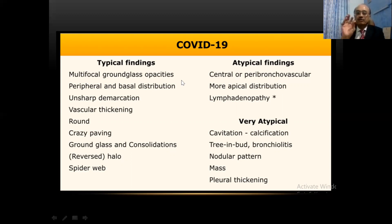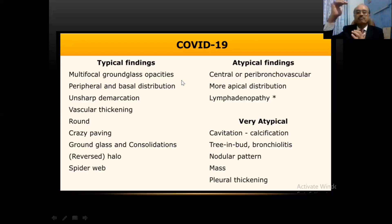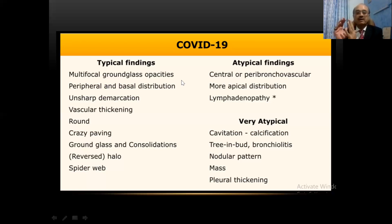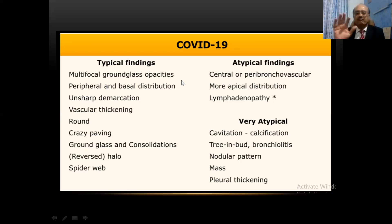There are certain atypical findings also present in COVID-19 patients, though the chances are unlikely and require correlation with other investigations. These include central or peribronchovascular shadows, ground glass opacities that are more apically distributed rather than the typical bilateral basal distribution, and lymphadenopathy — which in our country can be confused with tuberculosis, so we must keep an open mind. Very atypical presentations, very rarely, can include cavitation, calcification, bronchiolitis or tree-in-bud appearance, nodular pattern, a mass-like opacity mimicking bronchogenic carcinoma, or pleural thickening.